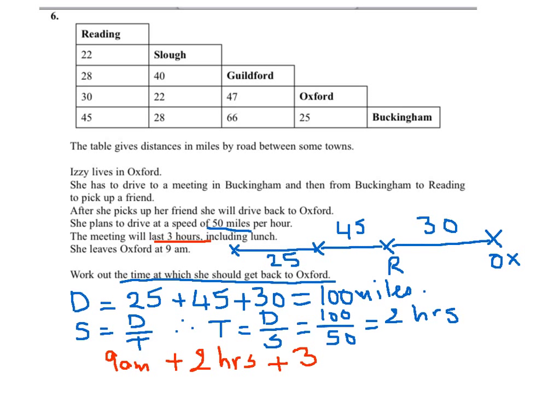So in total it works out from nine o'clock plus the five hours. It will work at 2 p.m. And this is the time she should get back to Oxford by two o'clock in the afternoon.